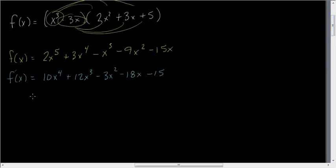would be 10x to the fourth plus 12x to the third minus 3x squared minus 18x minus 15. Okay, well, in that case, then, our product rule should come up with the same thing. And so let's go ahead and rewrite our function, f of x, is equal to the product of x cubed minus 3x and the quantity 2x squared plus 3x plus 5.